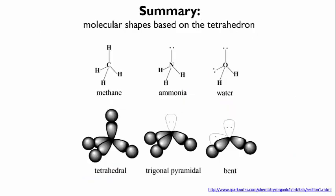So to summarize what we've just looked at, methane, ammonia, and water are all based on the tetrahedral geometry. But depending on how many bonds and how many lone pairs are on the central atom, the true shape of the molecule can be either tetrahedral, trigonal pyramidal, or bent.